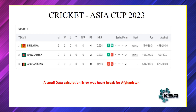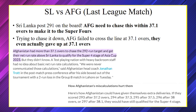Sri Lanka posted 291 on the board. In a 50-over match, the chasing team has 300 balls to achieve the target. Since this was the last game, run rate came into picture. Afghanistan had lost to other teams with a greater margin, so in this last league match they needed to score the target within 37.1 overs to make it to the playoffs.